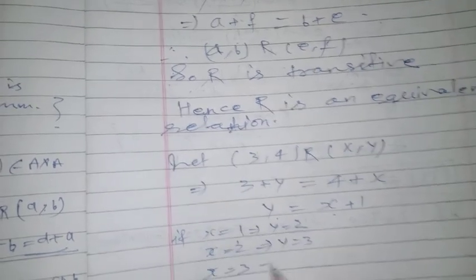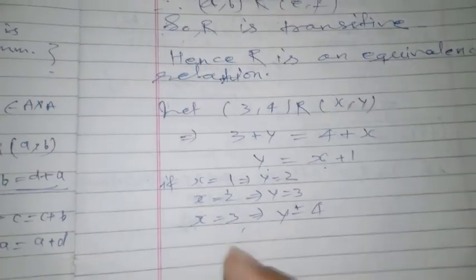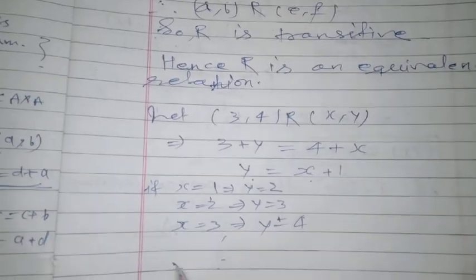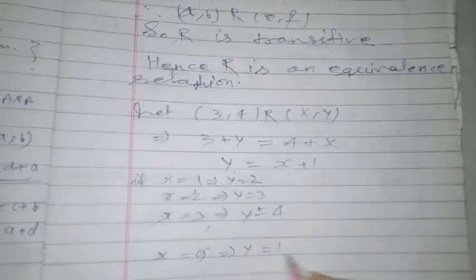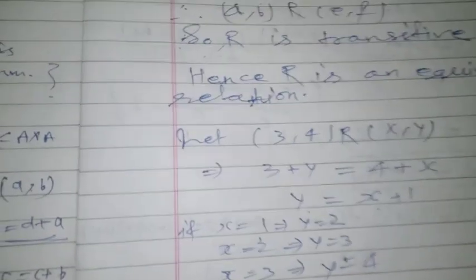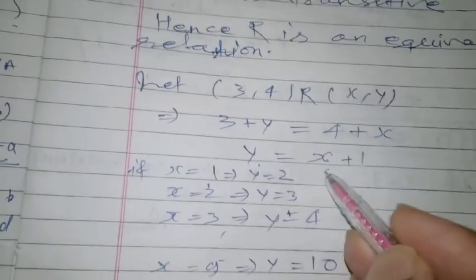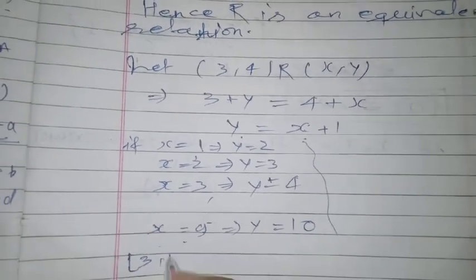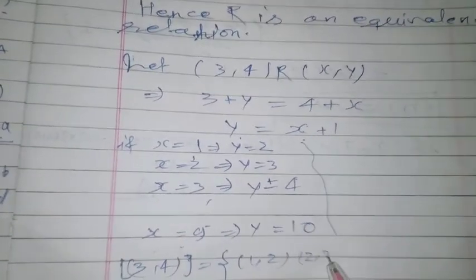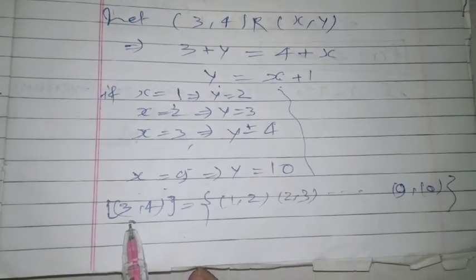Continuing: if x=4, y=5, and so on up to x=9, y=10. If x=10 then y=11, but 11 is outside the set, so that pair is excluded. Therefore the equivalence class of (3,4) is: {(1,2), (2,3), (3,4), (4,5), (5,6), (6,7), (7,8), (8,9), (9,10)}.